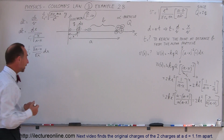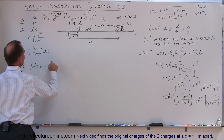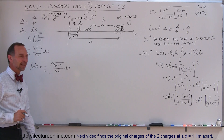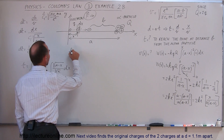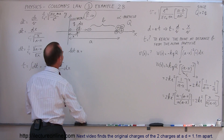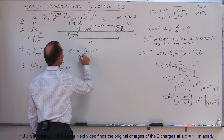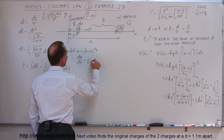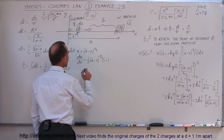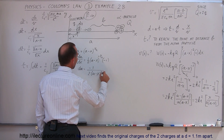Continuing with a bit more board space: t equals the integral of dt, which equals 1 over c1 times the integral of the square root of (a minus x) divided by the square root of x, dx. To integrate that, I'll make the substitution u equals the square root of (a minus x), written as (a minus x) to the 1/2 power. Taking the derivative: du/dx equals 1/2 times (a minus x) to the minus 1/2 times minus 1. So du equals minus 1 over 2 times (a minus x) to the 1/2 power, times dx.